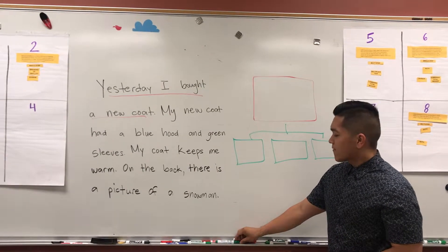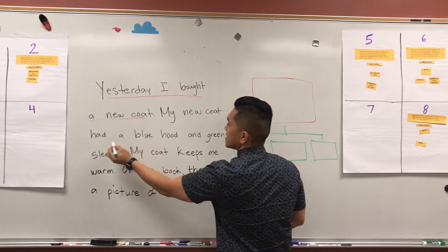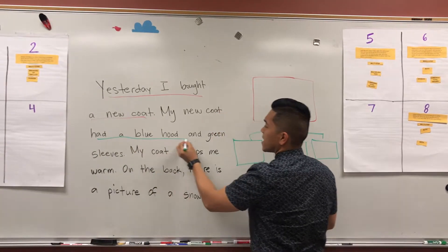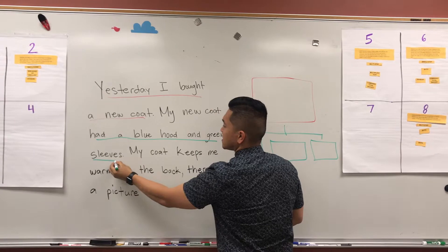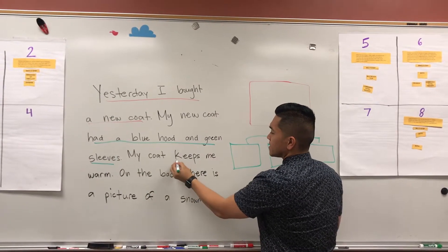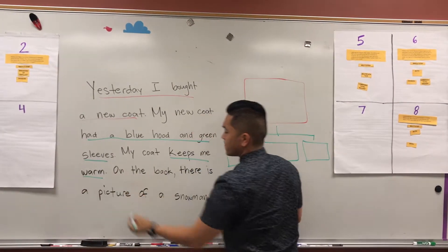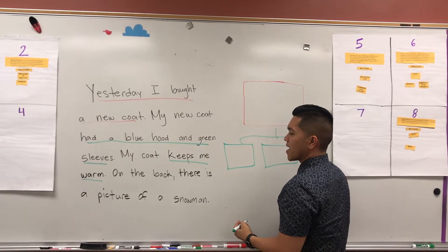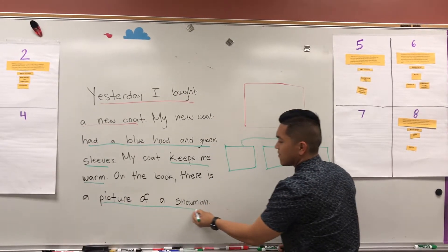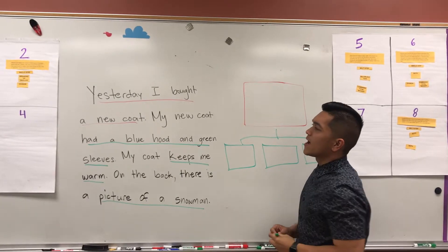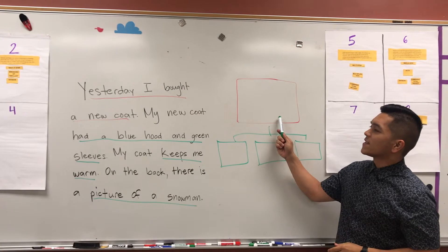And we can find three supporting details: the coat had a blue hood and green sleeves, my coat keeps me warm, and on the back there is a picture of a snowman.